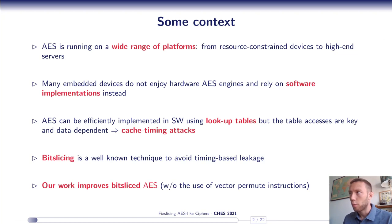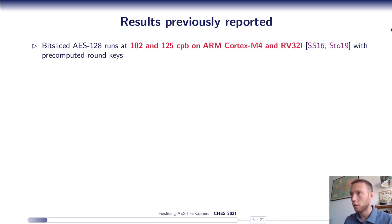As you probably guessed, our work is about AES implementations. Nowadays AES is running on a wide range of platforms from resource-constrained devices to high-end servers, and it appears that many embedded devices do not enjoy hardware AES engines and rely on software implementations instead. We know that AES can be efficiently implemented in software using pre-computed lookup tables, the so-called t-table implementation, but we also know that it implies memory accesses that are key-dependent which can lead to cache timing attacks. One can prevent such attacks by using a constant-time implementation variant like bitslicing for instance. And that's what our work is about. It improves bitslice AES implementations for processors that do not use vector or SIMD instructions. Our paper focuses on 32-bit embedded platforms, especially ARM Cortex-M and 32-bit RISC-V processors.